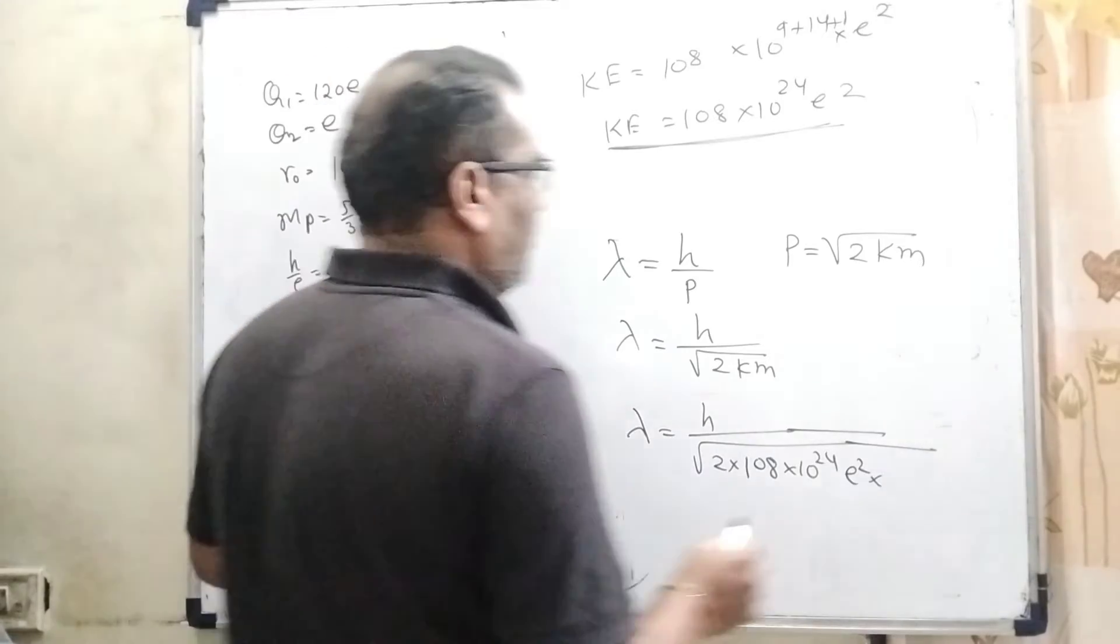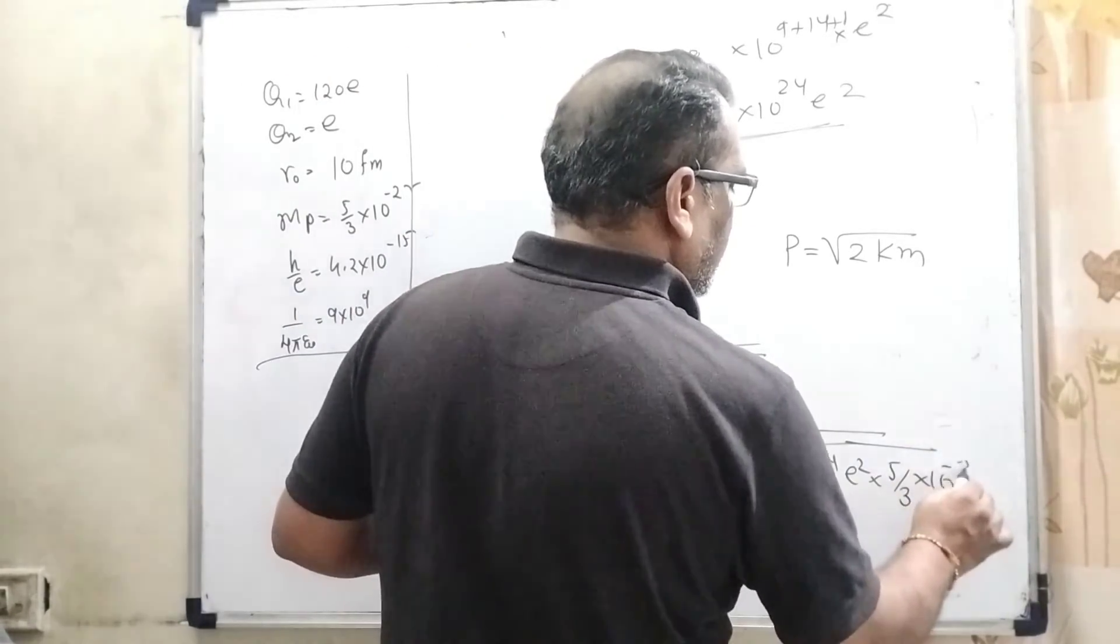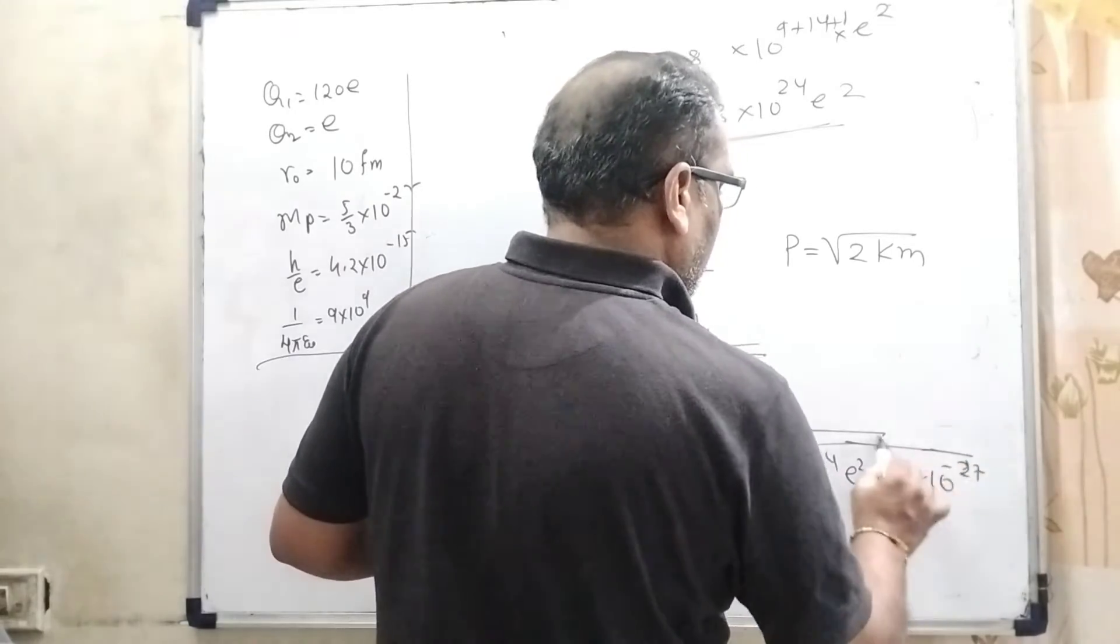What is the value of mass? Mass of proton is given as 5/3 × 10^-27.